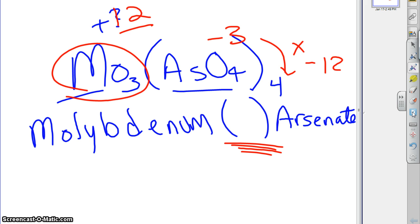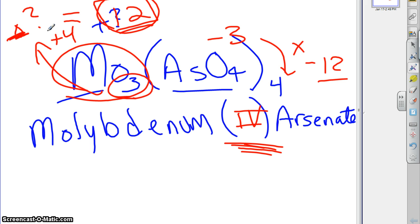What we have here is we have 3 molybdenums times each one's charge must equal 12. And what each one's charge is, that's what goes in here. Well, 3 times what is 12? It's 4. So if each molybdenum is plus 4, and we have 3 of them, that would be 12. And that would cancel out with this other 12. And so each one must be 4, and that's where we get our answer. Molybdenum(IV) arsenate would be the answer to that one.